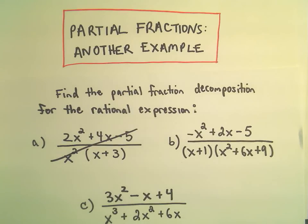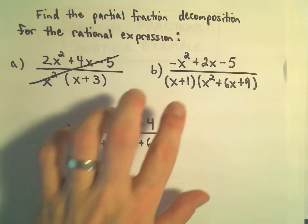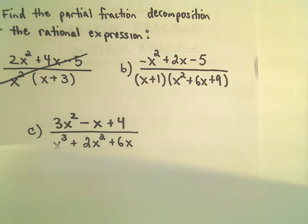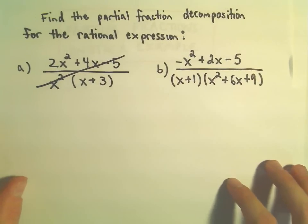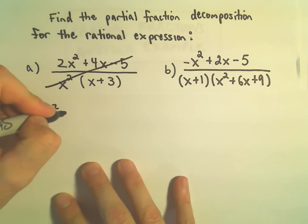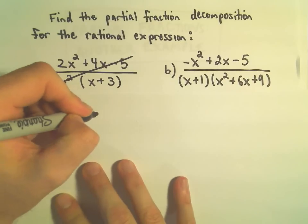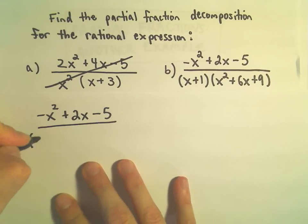In this video I'm going to do another example of finding a partial fraction decomposition. Here we're going to do example b. The first thing I have to think is, sometimes you have to worry about doing long division for these rational functions. You have to do long division if the degree of the numerator is greater than or equal to the degree of the denominator.